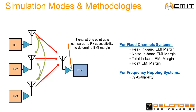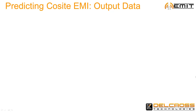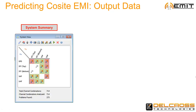EMIT locates worst-case margins, taking all of these intermods into consideration. After an analysis, EMIT shows a system summary window, which is a matrix of the receive and transmit systems on the platform. Any EMI margin violation shows up as a red square. Combinations that pass EMI margins show up as a green square. This matrix shows the one-on-one performance summaries, and is usually the first step for examining and sorting out individual system-on-system EMI cosite issues.